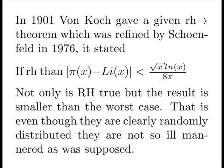In 1901, von Koch gave, given RH implies theorem. And this was refined by Schoenfeld in 76. It stated that if the Riemann hypothesis were true, then pi of x against the backbone was absolutely bounded by the form shown here. Not only is the Riemann hypothesis true, but the result is smaller than the worst case. That is, even though they are clearly randomly distributed, they are not so ill-mannered as was supposed.